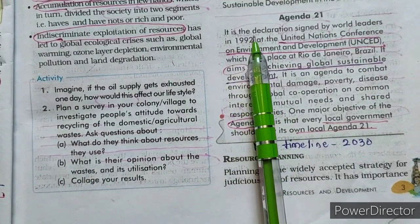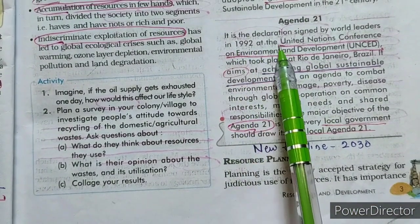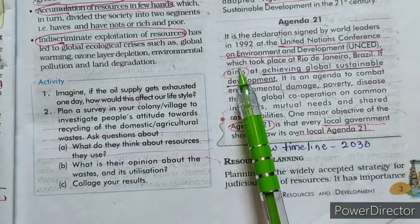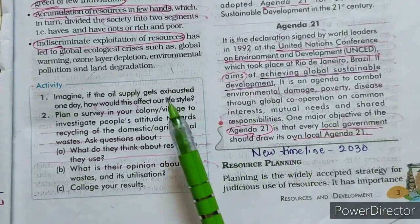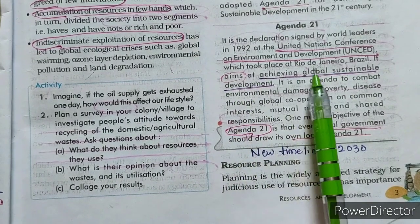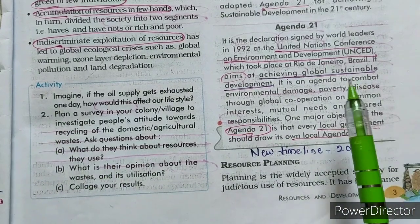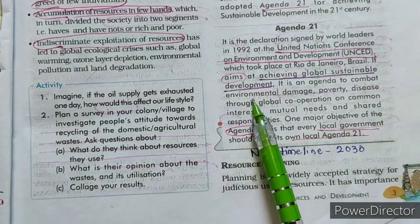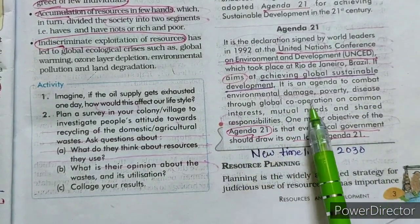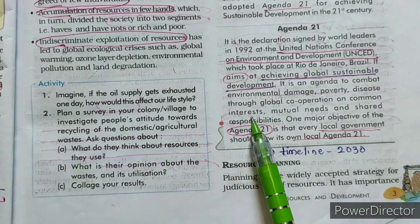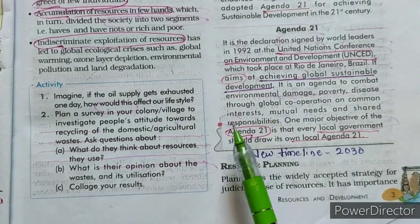Agenda 21 is the declaration signed by world leaders — more than 100 heads of state — in 1992 at the United Nations Conference on Environment and Development. Its main aim is achieving global sustainable development, not for one country but for the whole world, with no harm to natural conditions. It is an agenda to combat environmental damage, poverty, and diseases at international level through global cooperation on common issues like poverty, diseases, terrorism, and war.